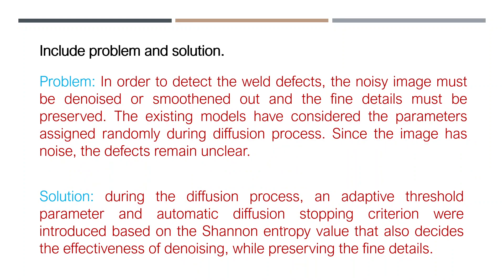The second one is include problem and solution. What are the problems you have discussed in your paper? You can write two separate sets of lines here. In the problem statement, you can write: 'In order to detect the welded defects, the noisy image must be denoised or smoothened.' Then for the solution, mention what techniques you included in the methodology of the paper. For example: 'During the diffusion process, an adaptive threshold parameter and automatic diffusion stopping criteria were introduced.' This is the solution to the problem.